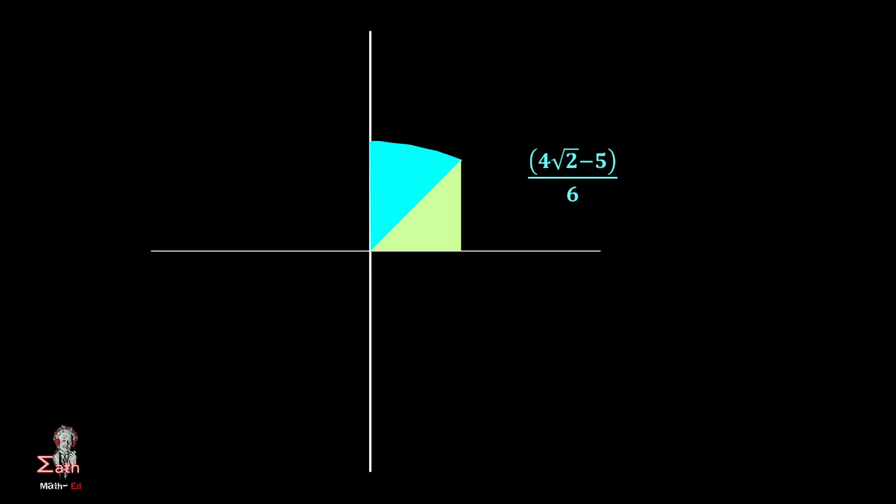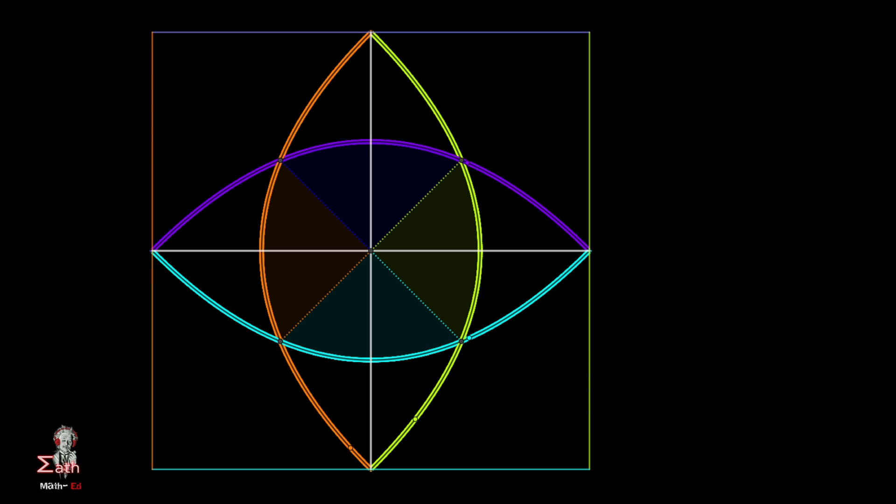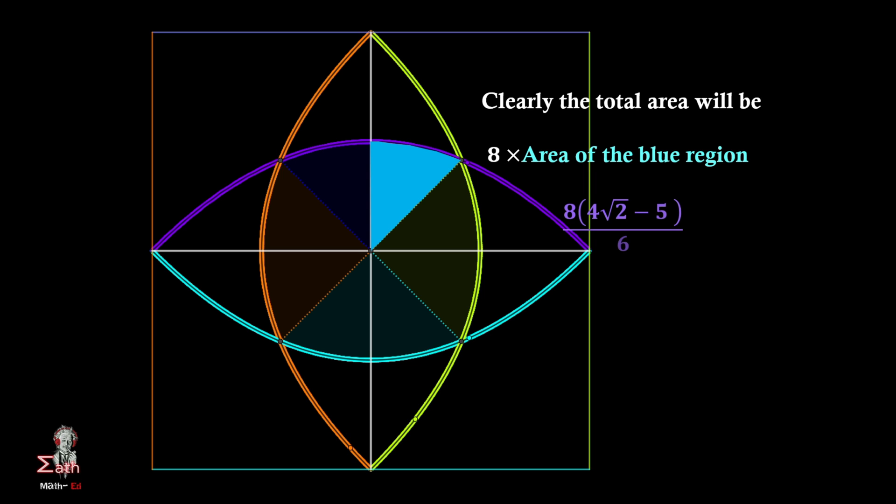So as all the areas you can see are symmetric with respect to y = x line clearly the total shaded area will be 8 times area of the blue region. So our required area is 8·(4√2 - 5)/6 and our required probability is we should divide our result by 4. So clearly we should end up with getting the required probability is (4√2 - 5)/3.